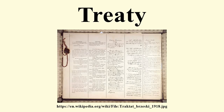Modern form: Since the late 19th century, most treaties have followed a fairly consistent format. A treaty typically begins with a preamble describing the contracting parties and the joint objectives in executing the treaty, as well as summarizing any underlying events.